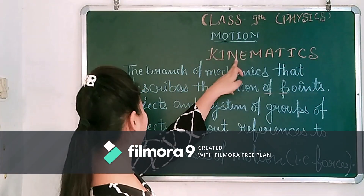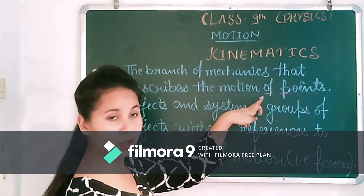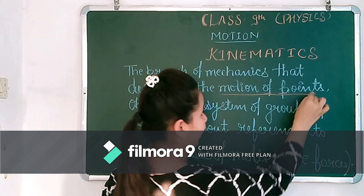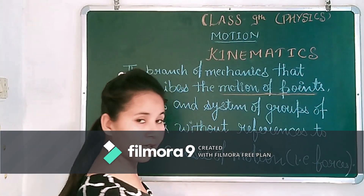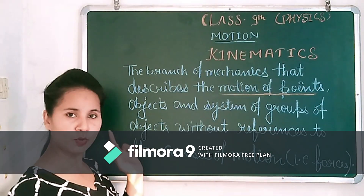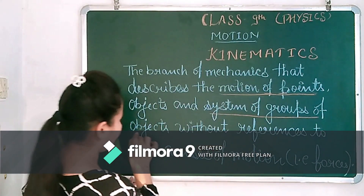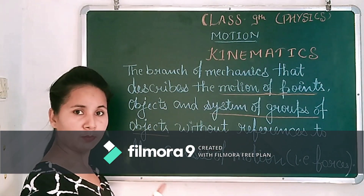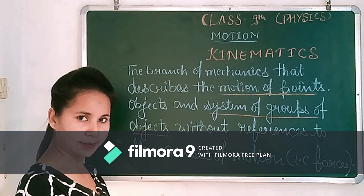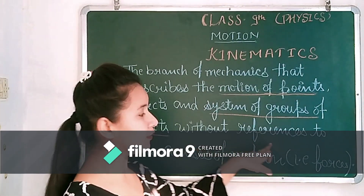Kinematics is the branch of Mechanics that describes the motion of points. Look at the points — motion of points. Which points? Motion of points, system of groups of objects — two or more objects, a group of objects.